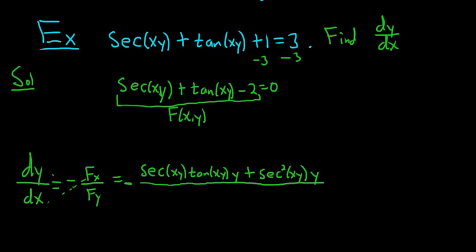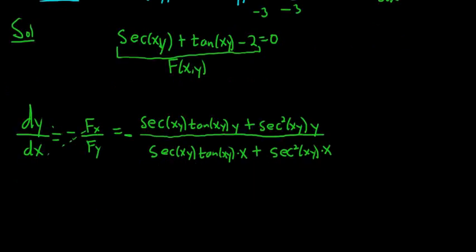So we did not have to use any product rules. We have the minus. On the bottom, we do the same thing, but with respect to y. So again, the derivative of secant is secant tangent. So we get secant xy tangent xy times the derivative of xy with respect to y. The derivative of y is 1. So we just get x. Plus, the derivative of tangent is secant squared. So we get secant squared of xy times the derivative of the inside. The derivative of xy with respect to y is just x.